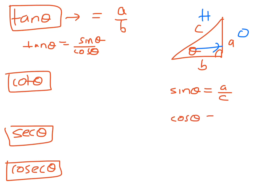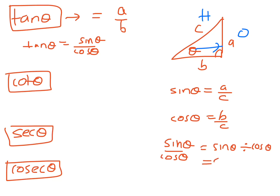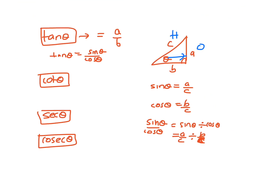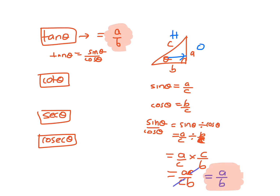And cos θ is equal to b on c. So if I did sine θ on cos θ — sine θ divided by cos θ — that would be a/c divided by b/c. When you divide, you multiply by the reciprocal, so it's a/c times c/b. The c's cancel out, and you just end up with a on b. You've got a/b from tan θ and a/b here — they are the same — therefore tan θ must equal sine θ on cos θ.